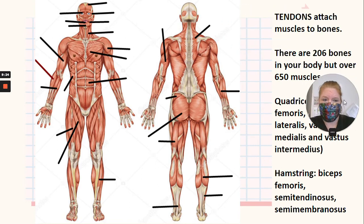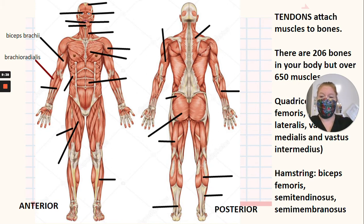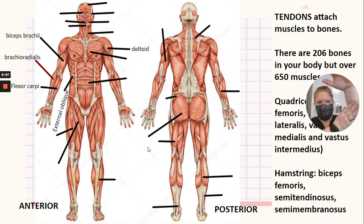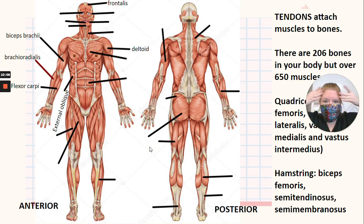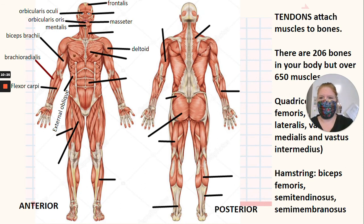So which names do you have to remember? We have an anterior view and a posterior view. We need the biceps brachii, the brachioradialis — attaching from the upper arm down to the radius — the deltoid, the external obliques which allow some rotation of your torso, the flexor carpi which allows you to flex your wrist, the frontalis on your forehead, the masseter which allows you to move your jaw, the mentalis on your chin — remember, the mental region is your chin.